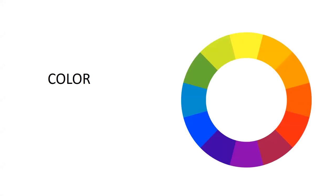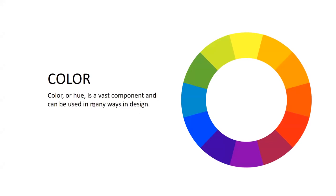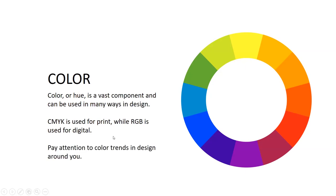Color theory is a huge concept. Color or hue is a vast component and can be used in many ways in design. CMYK is used for print while RGB is used for digital. Pay attention to color trends and design around you — for example, early smartphone apps used color and gradients to make buttons look physical, whereas now design is very flat because we're used to how these devices work and don't need all those extra color and gradation borders.